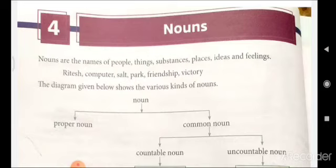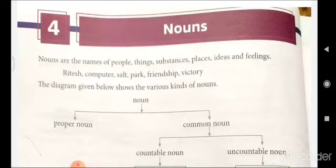So today, let us quickly revise what is a noun. Nouns are the names of people, things, substances, places, ideas and feelings. So whatever thing which possesses a name is considered as a noun. The examples given here are: Ritesh, Computer, Salt, Park, Friendship, Victory, etc.